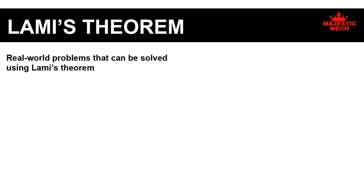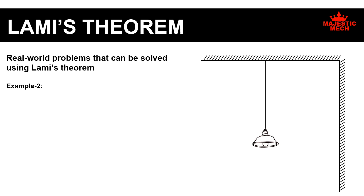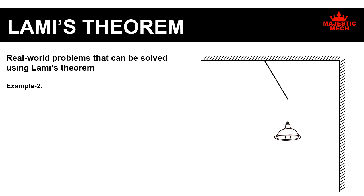Now let's take a look at another example. Consider a light assembly that is suspended from the ceiling of a room. Assume that the assembly is tied to the wall using a horizontal string. The weight of the light assembly pulls the assembly downwards. A horizontal load acts across the string that ties the light assembly to the wall. Similarly, there is one more tensile load that acts along the wire used to suspend the light assembly. You can use Lamy's theorem to calculate unknown forces and angles, assuming you know the values of some of the forces and angles.